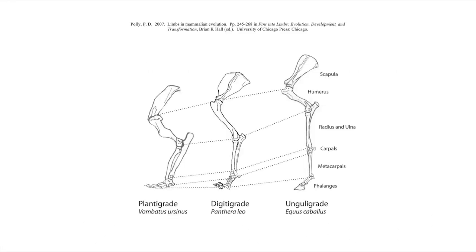In vertebrate functional morphology we often talk about the posture in legged locomotion in terms of how much of the foot is a foot as opposed to part of the leg. On the left we have a plantigrade posture where the foot is properly a foot and the metatarsals contact the ground during the step.